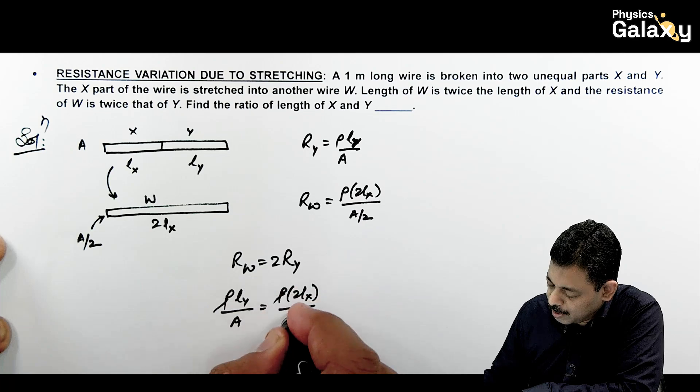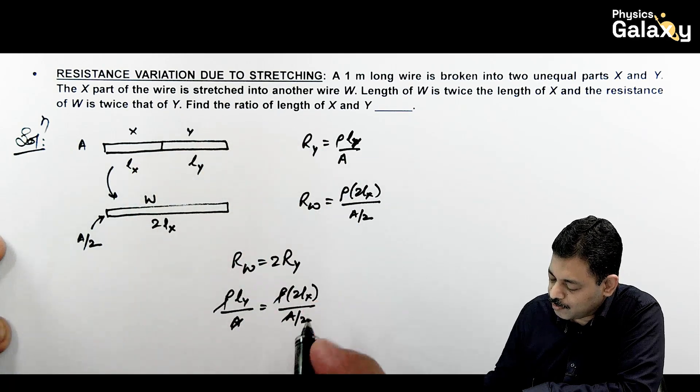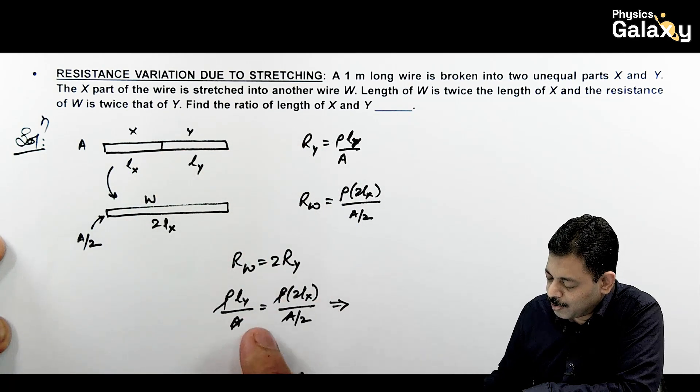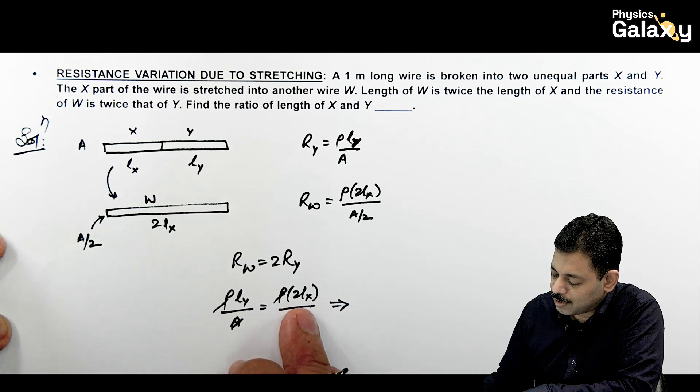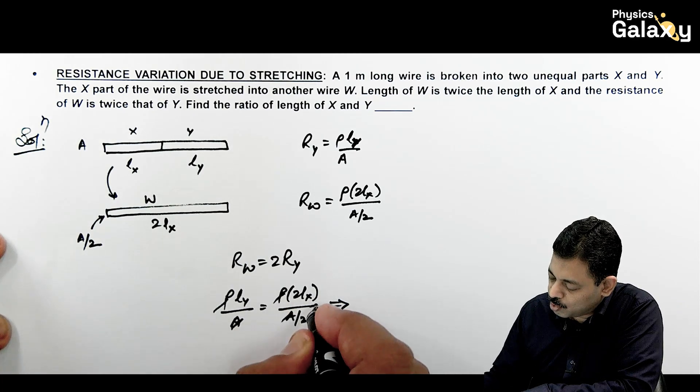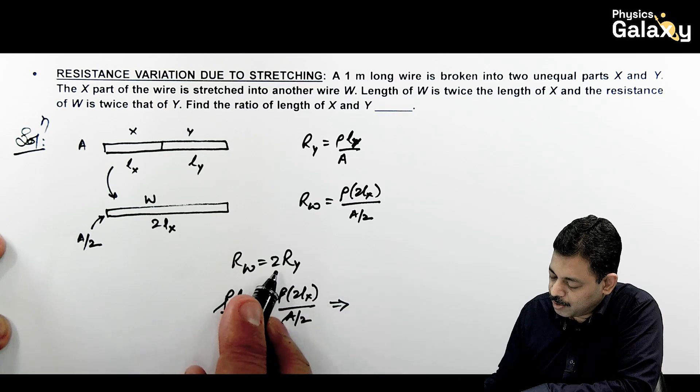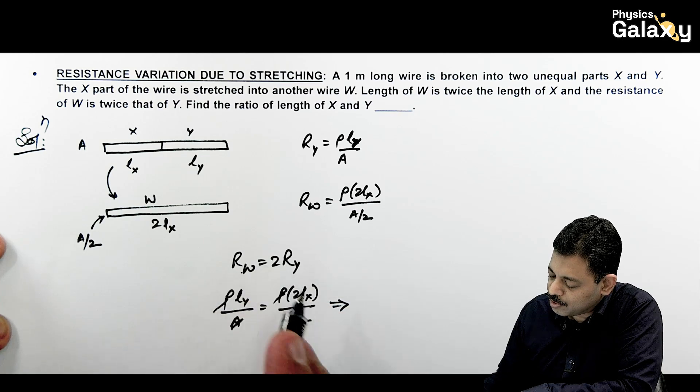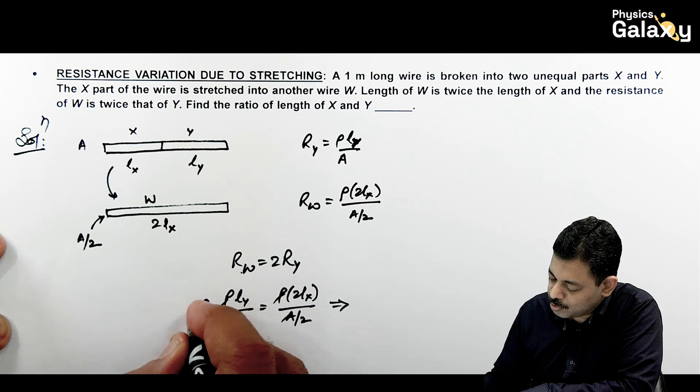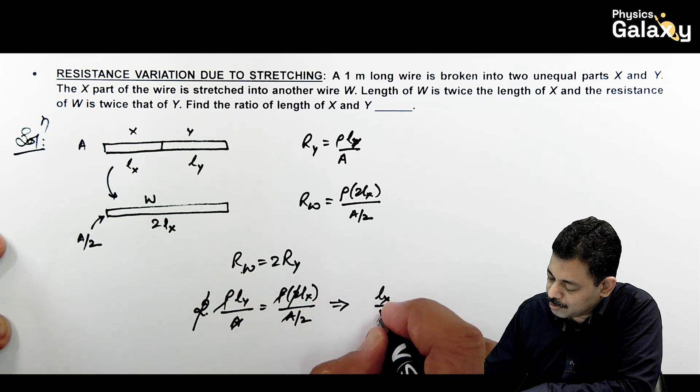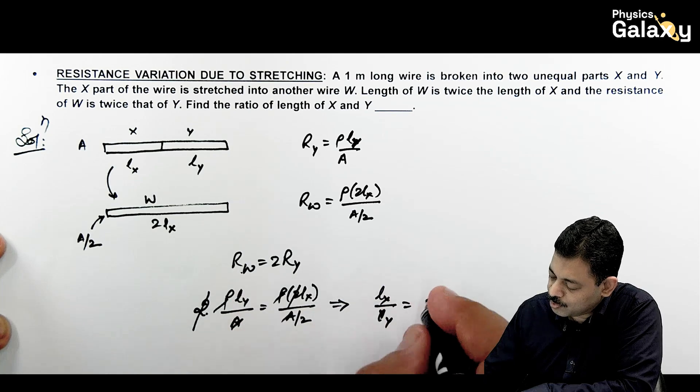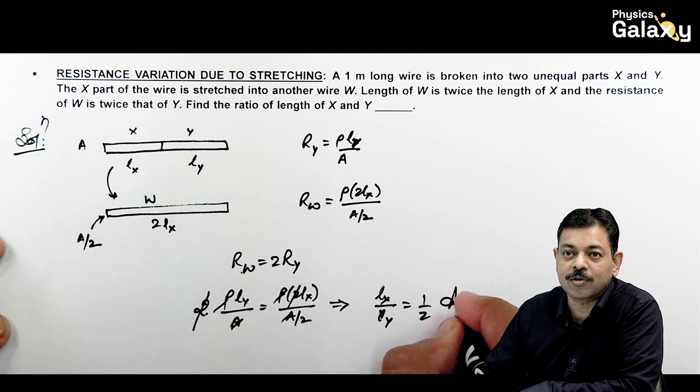If we substitute the values, ρLY/A = 2 × ρ(2LX)/(A/2). Here ρ and A get cancelled out. The question is asking the ratio of length of X to length of Y. We need to multiply by 2. Because resistance of W is twice of RY, the 2 gets cancelled out. This gives you LX/LY equals 1/2, that is the answer to this problem.